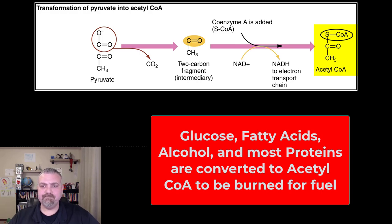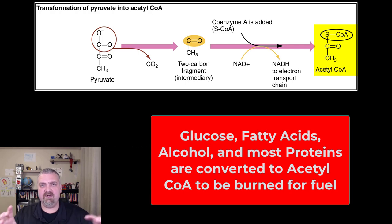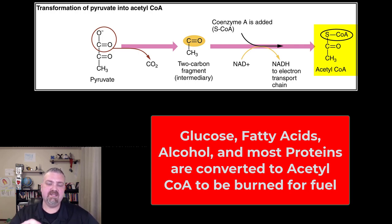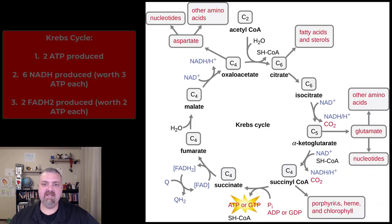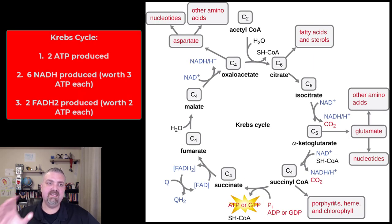Now, this acetyl-CoA conversion has occurred inside the mitochondria — in us, in eukaryotes. It's already been brought into the mitochondria, which there was a price to pay for, as we talked about in other videos. In bacteria, this would just be happening in the cytoplasm. But now we have the Krebs cycle.